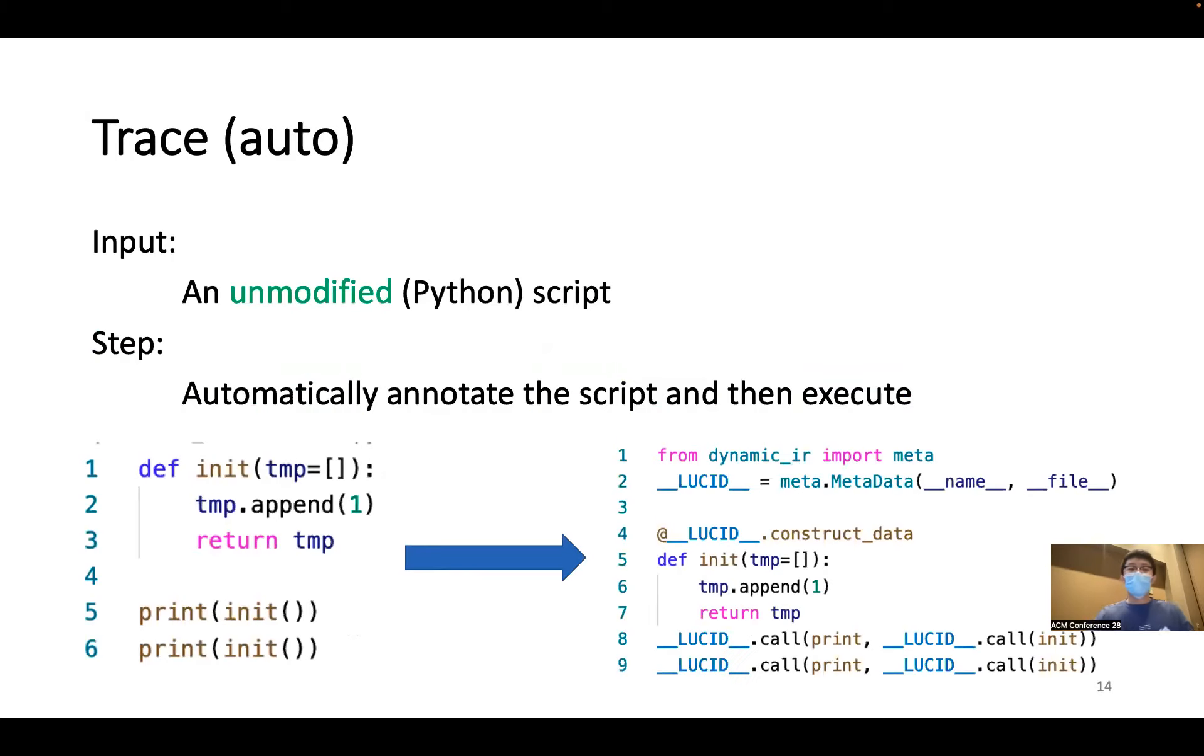The first step is to take an unmodified Python script and automatically transform it. So basically it wraps every operator and UDF in the script so that when it's actually executed, the tracing component gains extra chances to do preprocessing and post-processing for each operator. For example, code here on the left will be automatically wrapped into the code on the right.